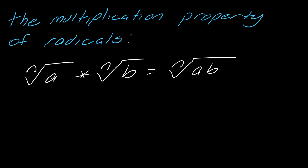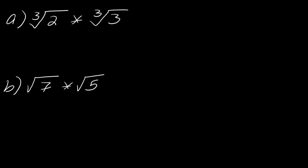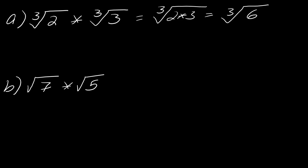So, that being said, let's take a look at a few basic examples. This is the cube root of two times the cube root of three, so I'll just multiply two times three and I will get the cube root of six. Or with the square root of seven times the square root of five — again, I'll just multiply those together and I'll get the square root of 35.